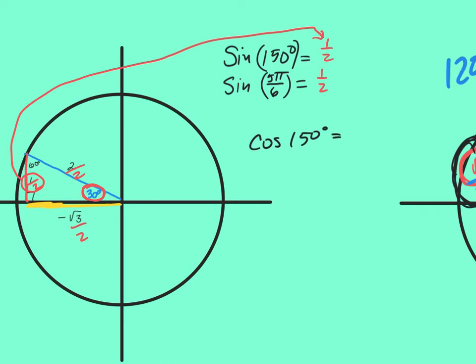What's cosine of 150? Root three over two — but negative. You could take adjacent over hypotenuse, or since cosines are x-values, just read the x right there. Either way works. Five pi over six is the same question — like saying I have three feet or I have a yard.